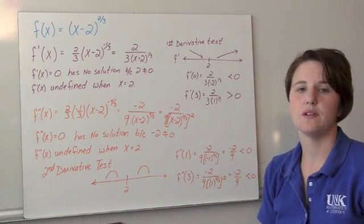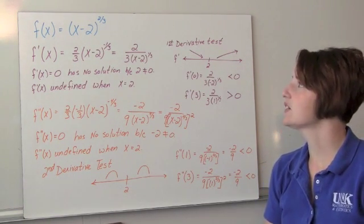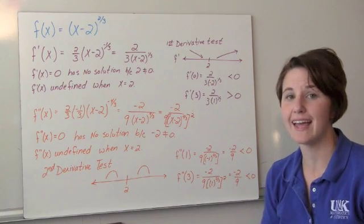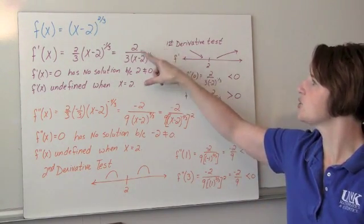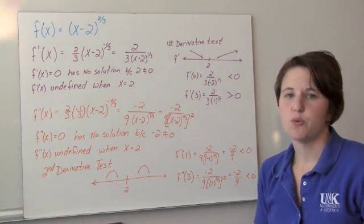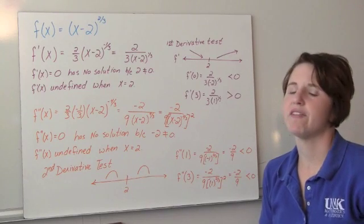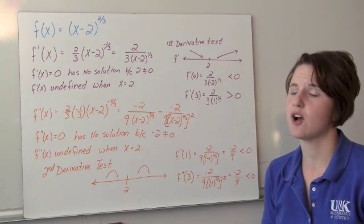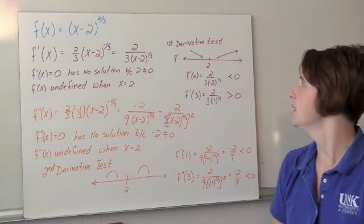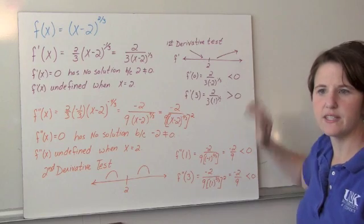Let's look at another example: f of x equals (x minus 2) raised to the 2/3 power. The first derivative is (2/3)(x minus 2) to the negative 1/3, rewritten as 2 over 3(x minus 2)^(1/3). The first derivative never equals zero since the numerator can't be zero, and it's undefined when x equals 2. So our only critical point is x equals 2, and doing the first derivative test, we're decreasing left of 2 and increasing right of 2.